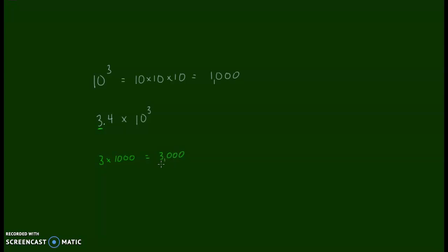3 times 1000 gives me four digits. So when I come back up to the top, I'm going to have to have four digits in my answer. The 3 and the 4 always stay next to each other, and to fill in these last two places, I'm going to need to put zeros. So 3 and 4 tenths, or 3.4 times 10 to the third, equals 3,400. That's one way of thinking about problems like this.